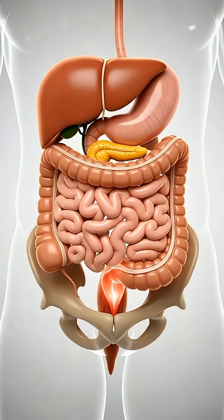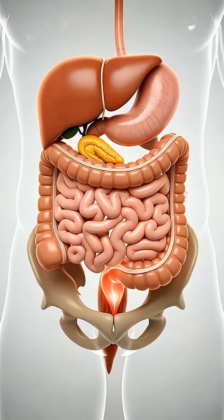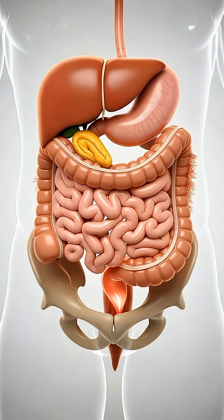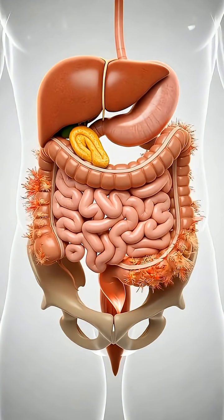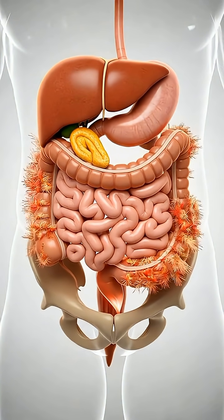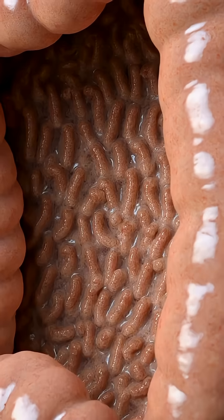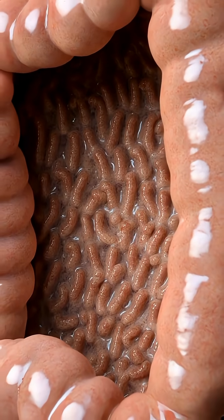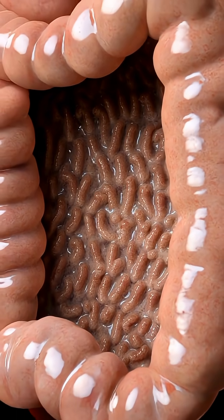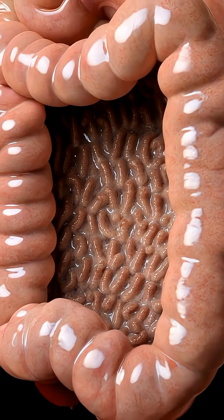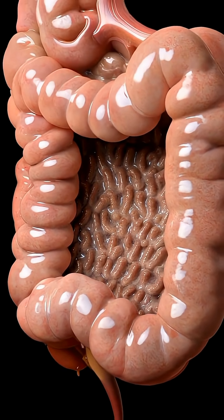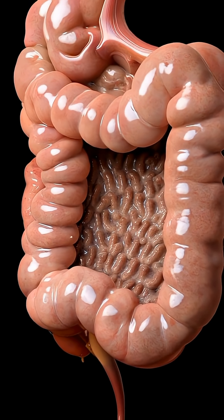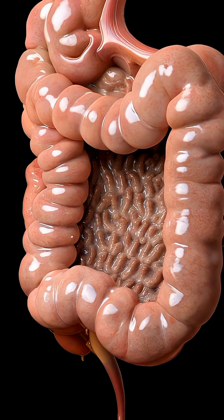After food is digested in the stomach, it moves into the intestines, where most nutrient absorption takes place. The small intestine has three parts: the duodenum, jejunum, and ileum. Each plays a specific role in nutrient absorption.